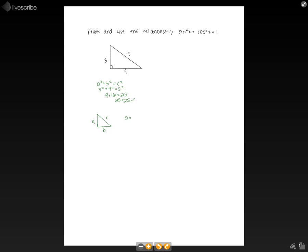we know that sine of this angle right here, A, sine of A equals a over c, and the cosine of angle A equals b over c.